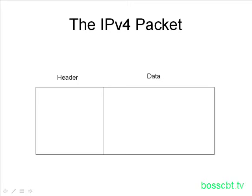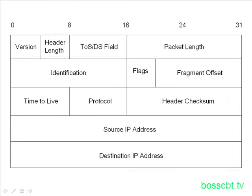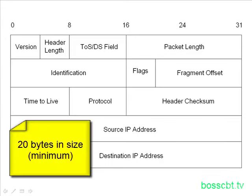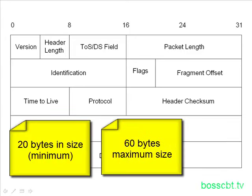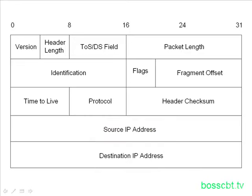Let's jump into the different fields of the IP header. The header is typically 20 bytes in size — that's the minimum. It can go up to 60 bytes, and it would increase in size if more fields, often referred to as options, are added to the header. Options are not used very often and aren't illustrated here. Just note that if you see an IP header bigger than 20 bytes, there's a reason — it can grow.